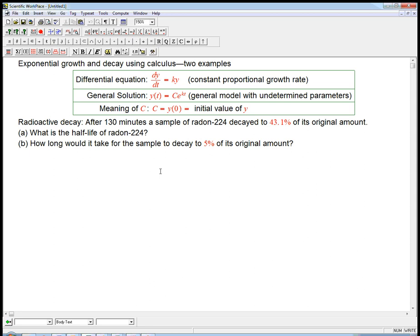Here's the second example of exponential growth and decay using calculus. We did growth before, now we're going to do decay, and specifically radioactive decay, which is the classic example that's extremely well modeled by an exponential decay relationship.